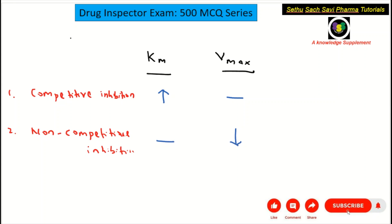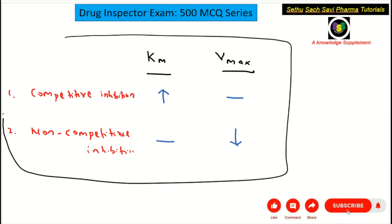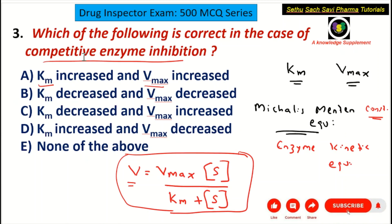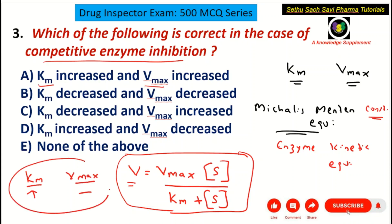You should remember this table: in competitive inhibition, Km is increased, no change for Vmax. In non-competitive inhibition, Km is unaffected, whereas Vmax decreases. Coming back to our question — the question was competitive inhibition — so Km is increased, whereas Vmax has no change.